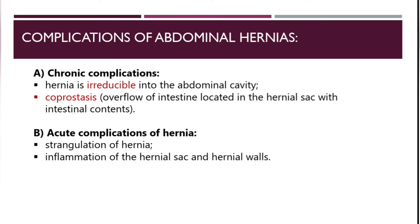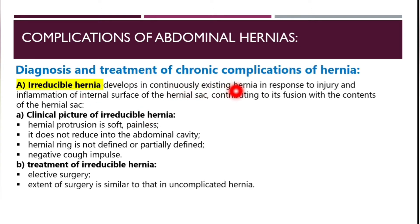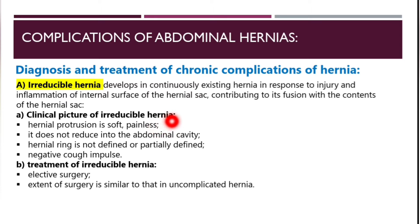Irreducible hernia develops in a continuously existing hernia in response to injury and inflammation of the internal surface of the hernia sac, contributing to its fusion with the contents of the hernia sac. The clinical picture of irreducible hernia includes a hernia protrusion that is soft and painless and does not reduce into the abdominal cavity.